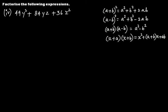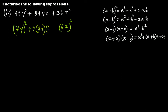For 49y² + 84yz + 36z²: write 49y² as (7y)² since 7×7 = 49, and 36z² as (6z)² since 6×6 = 36. Then 2·(7y)·(6z) = 84yz. This is of the form a² + 2ab + b² = (a + b)², so the factorization is (7y + 6z)².